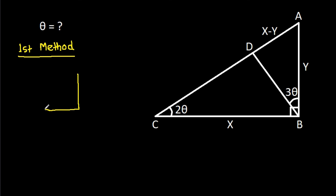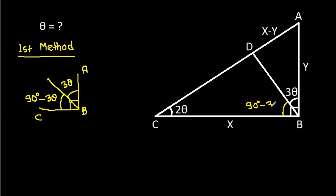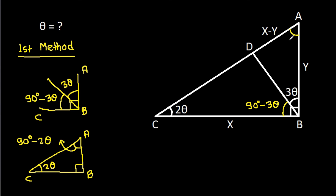The first method: angle ABC is 90 degrees and angle ABD is 3 theta, so angle DBC will be 90 degrees minus 3 theta. And in triangle ABC, angle ABC is 90 degrees and angle ACB is 2 theta, so angle BAC will be 90 degrees minus 2 theta.